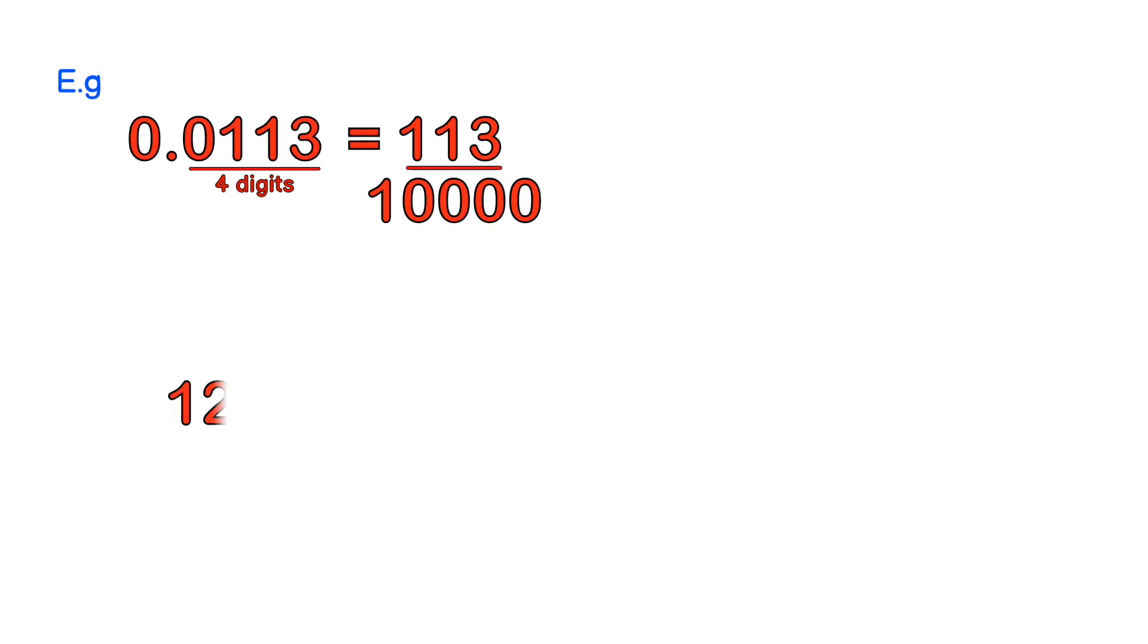Another example, 12.3. We notice there is one digit after the decimal point. So we remove the decimal. So we have 123. And we divide by 10. The one zero representing the one digit after the decimal point.